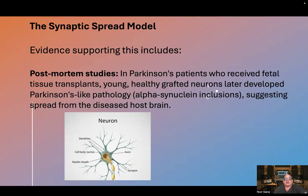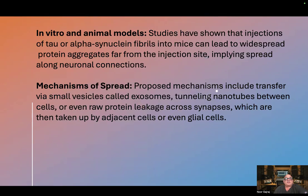The synaptic spread model: evidence supporting this includes post-mortem studies in Parkinson's patients who received fetal tissue transplants. Young, healthy grafted neurons later developed Parkinson's-like pathology — alpha-synuclein inclusions — suggesting spread from the diseased host brain. In vitro and animal model studies have shown that injections of tau or alpha-synuclein fibrils into mice can lead to widespread protein aggregates far from the injection site, implying spread along neuronal connections.